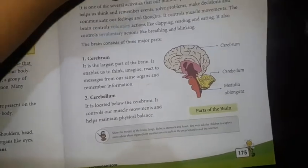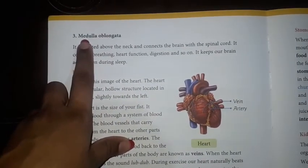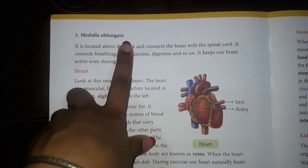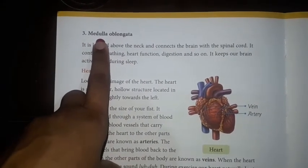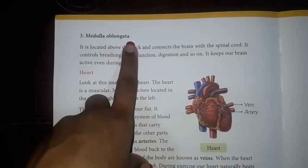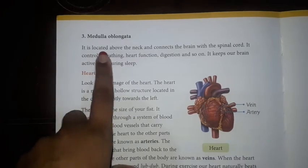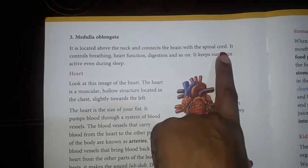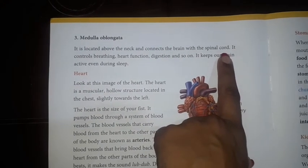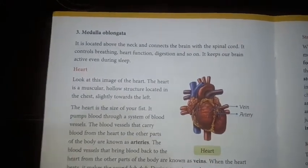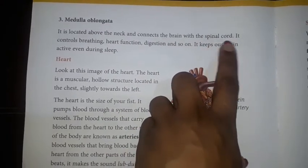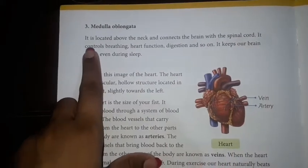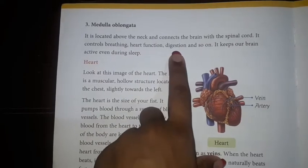Now we have the medulla oblongata. It is located above the neck and connects the brain with the spinal cord. It connects the spinal cord to the brain.